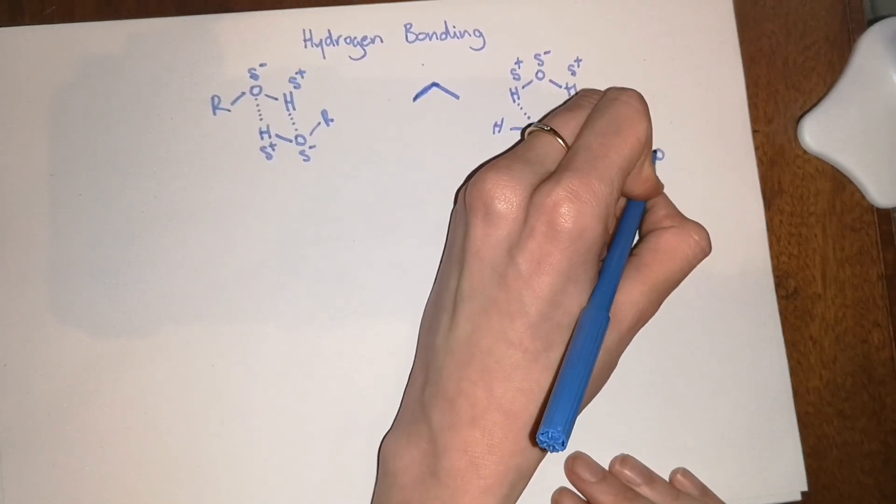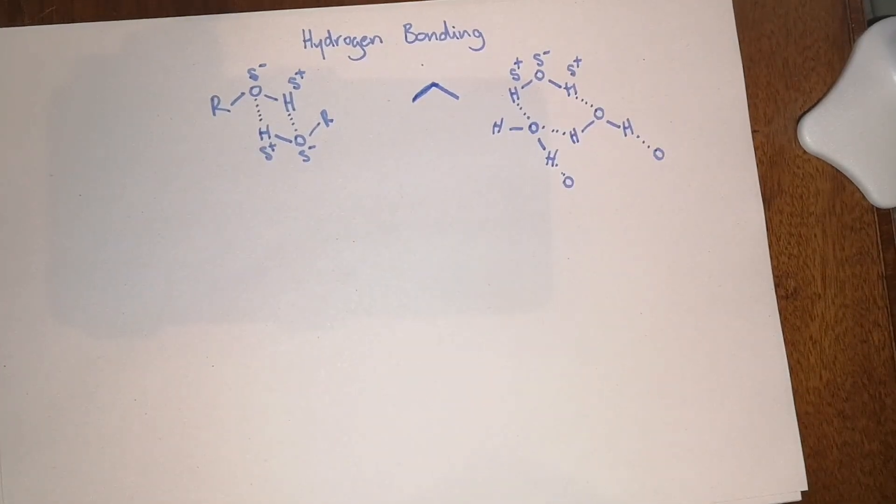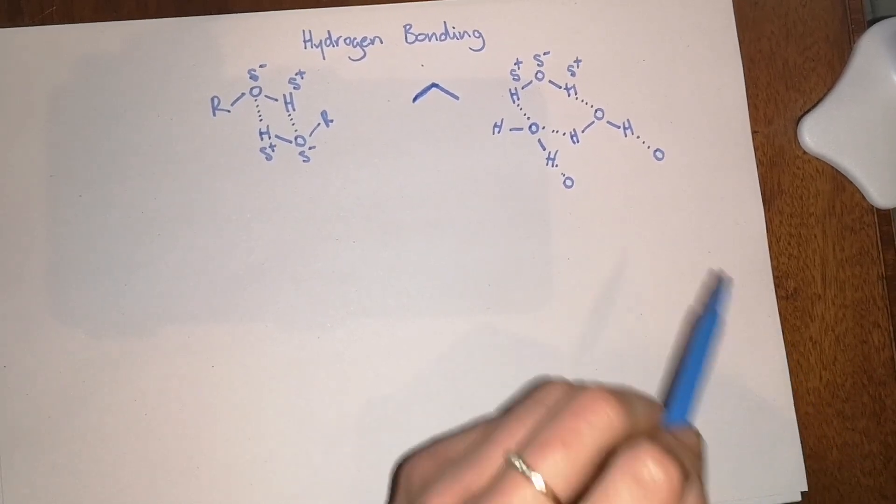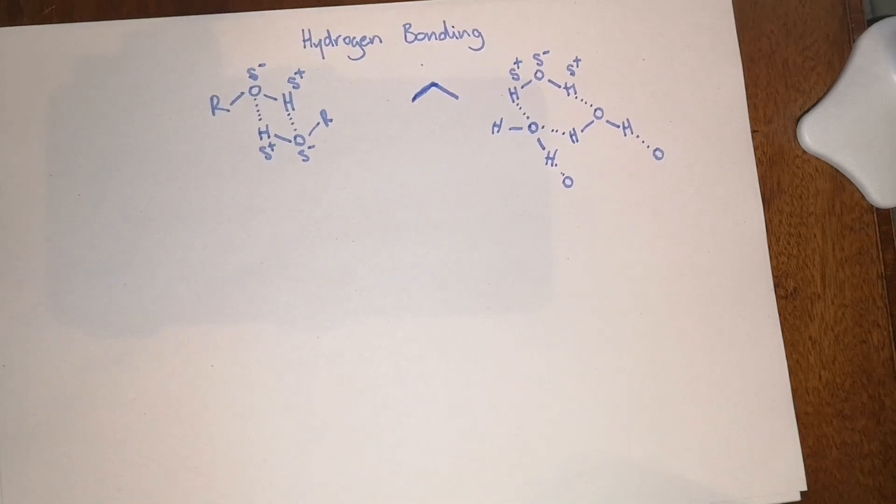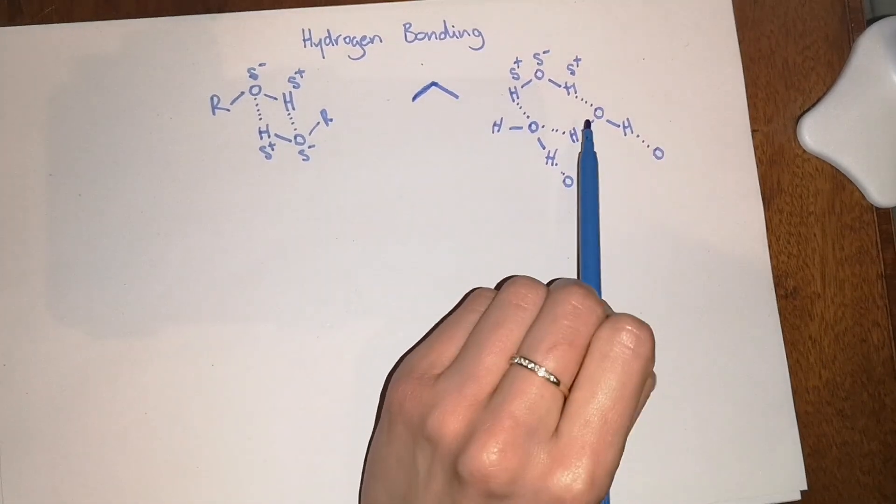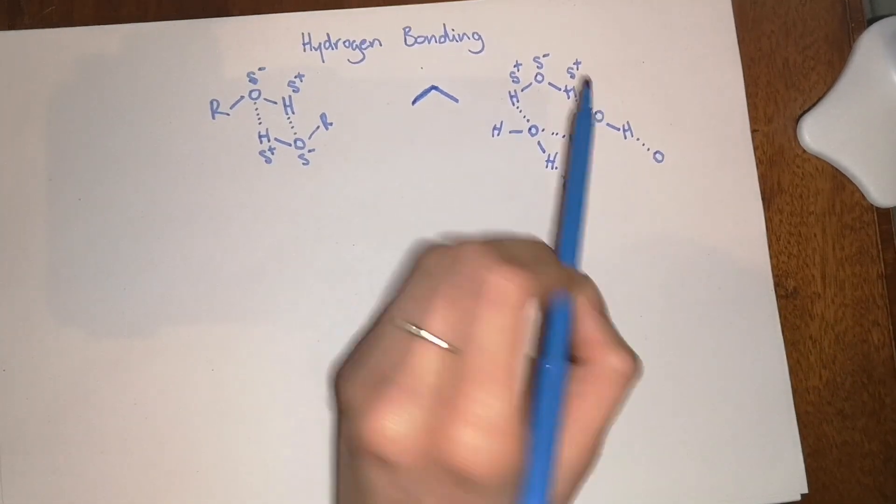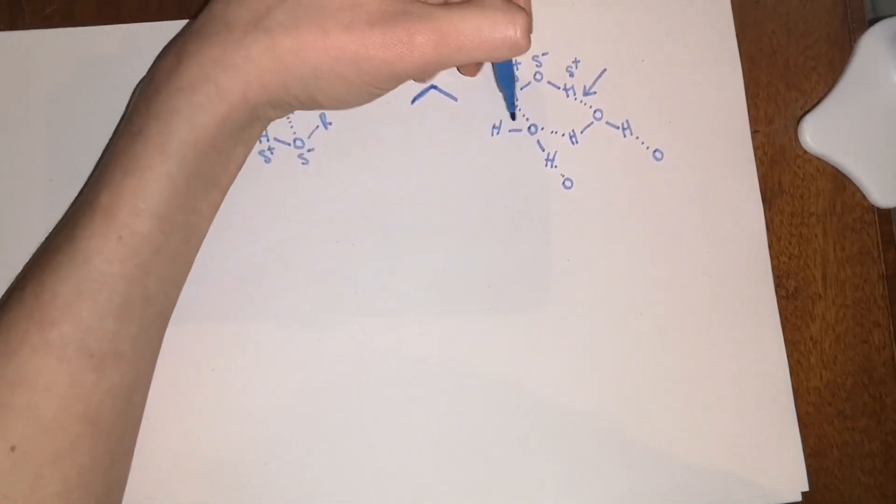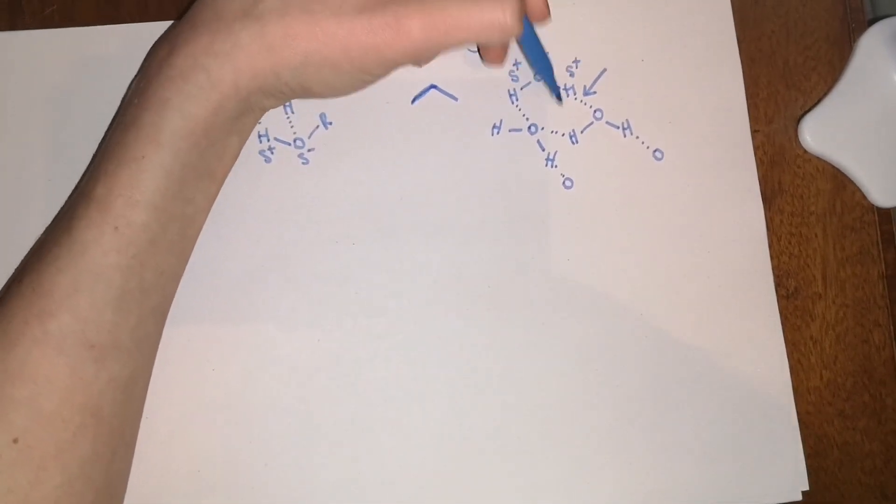So it becomes very difficult to separate the molecules from each other. The reason something boils or turns into a gas from a liquid is because you are separating all of the molecules really far away from each other. To do that in water, it's very difficult because you have to provide enough energy to interrupt all of those intermolecular forces and there's quite a lot of them.